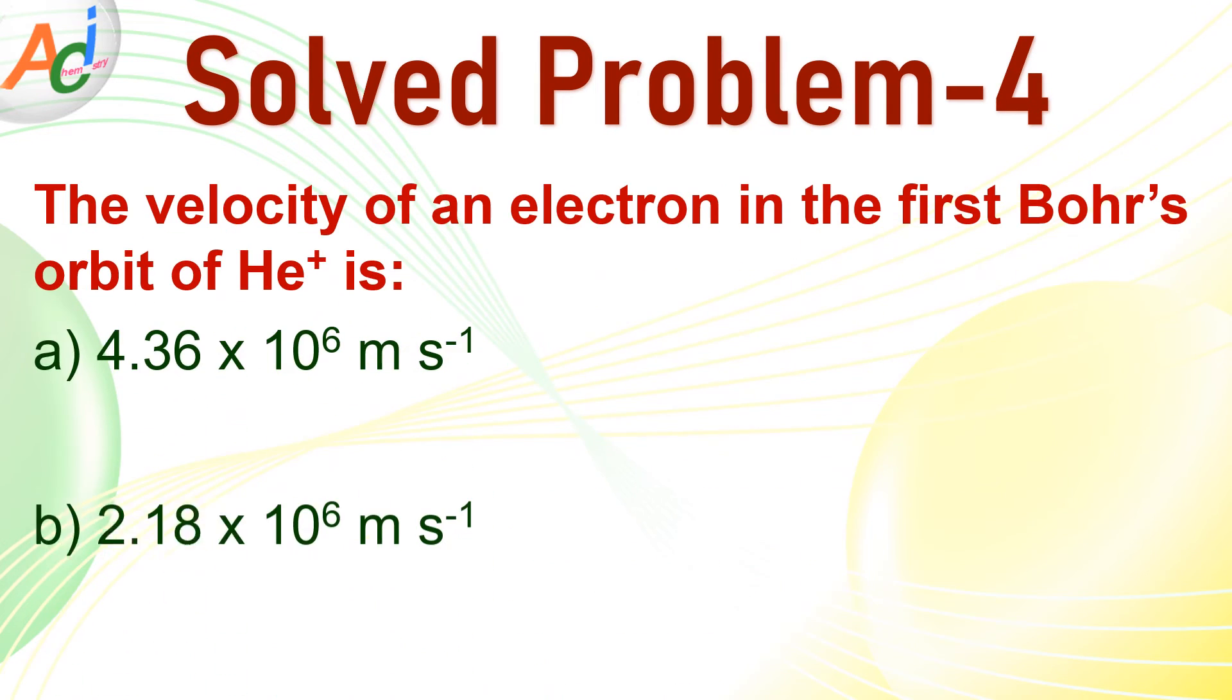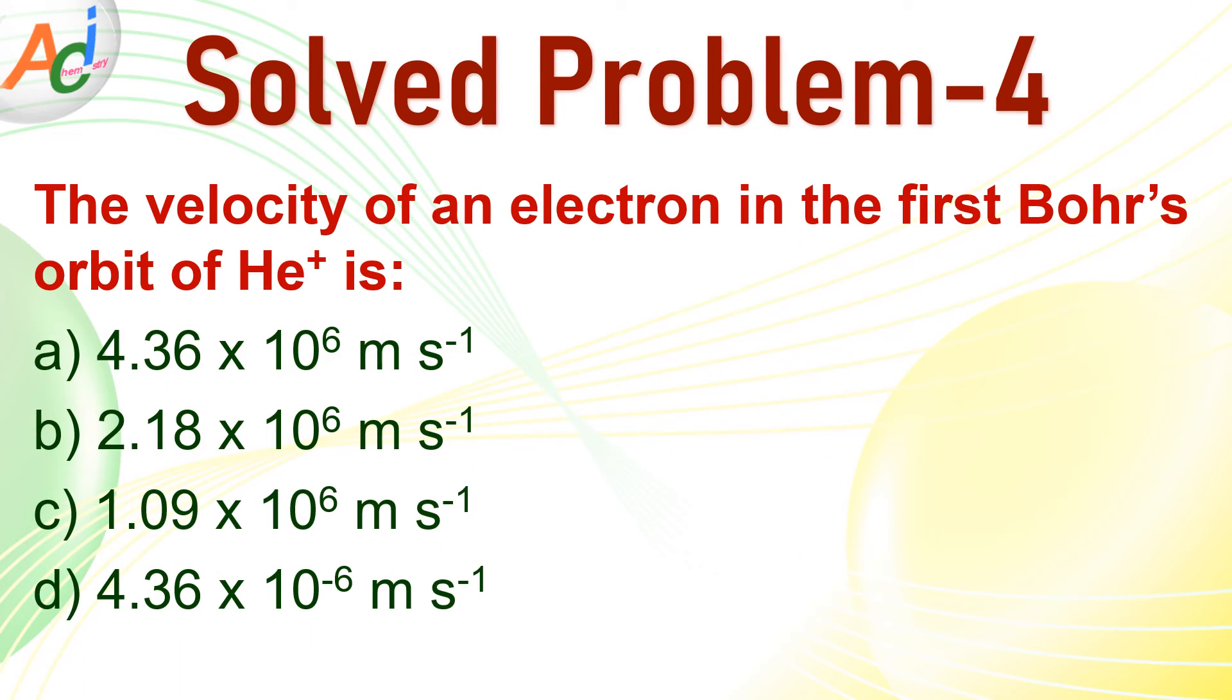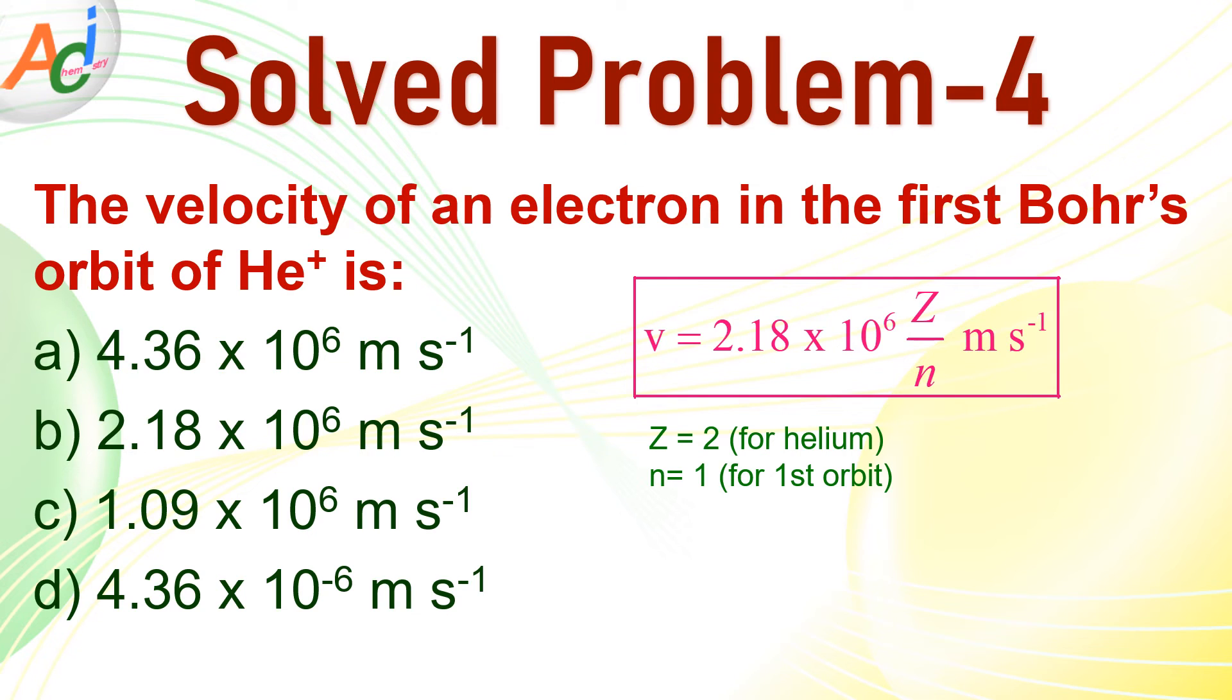And this is the fourth problem. You have to find out the velocity of an electron in the first Bohr's orbit of helium uni-positive ion. So the correct option is a. Z is equal to 2 for helium and n is equal to 1 because the electron is revolving in the first orbit. Just plug in the values you will get 4.36 × 10^6 meter per second. Just compare this value with that of hydrogen atom so the correct option is a.